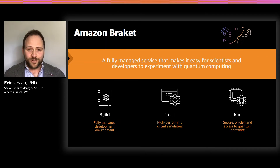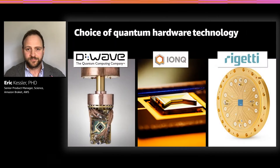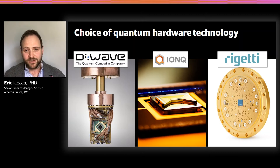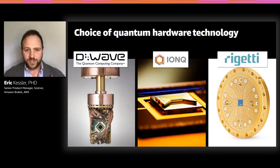And of course, most importantly, we provide secure and on-demand access to a range of quantum computers. Today, we provide access to three different types of quantum computers. First, we provide access to two quantum annealers from D-Wave. We also have a quantum computer based on trapped ion technology from IonQ. And finally, we have Rigetti's Aspen-8 chip available, which is based on superconducting qubit technology.